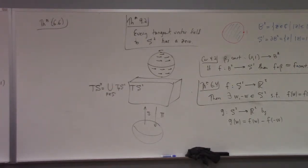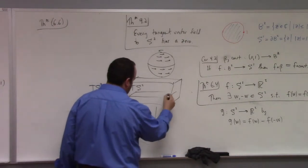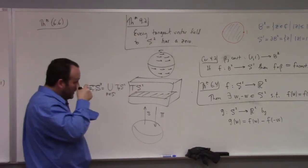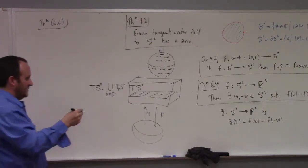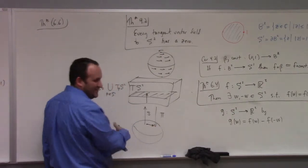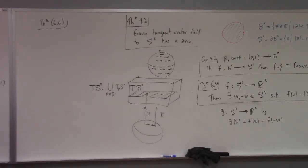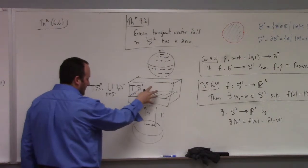You can't find a section of the tangent bundle to a sphere which is everywhere nonzero, because to do that would be to comb the hair on the sphere everywhere without a cowlick — to assign a vector field which is everywhere nonzero and continuously assigned on the sphere. The inability to put that vector field on the sphere speaks to the inability to find an abstract mapping from the two-sphere to the tangent bundle — the so-called global section.